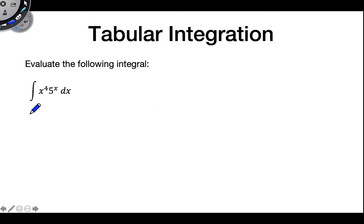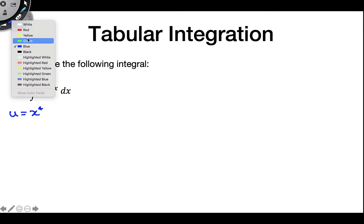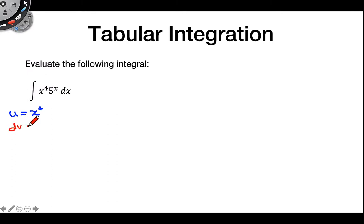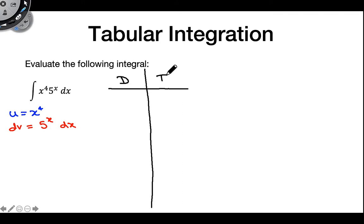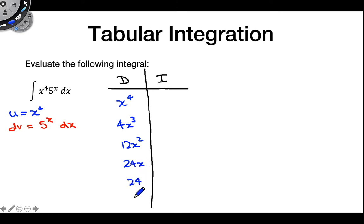Final example for the day. Once again, take a second — see if you can figure out what's a good choice for u and what's a good choice for dv. Hopefully you found u is x to the fourth, as always, and dv is 5 to the x dx. The D column is going to be exactly the same as in the previous example since we're still working with x to the fourth: 4x cubed, 12x squared, 24x, 24, and 0.